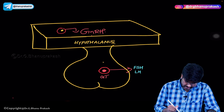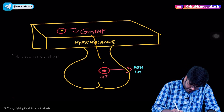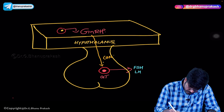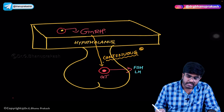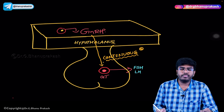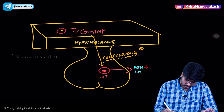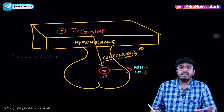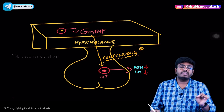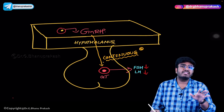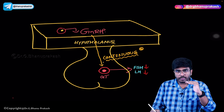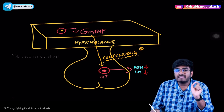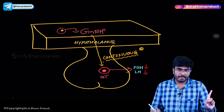Now, what happens if there is a continuous release of GnRH onto gonadotropes? FSH and LH are not going to be produced. In this condition, FSH levels go down and LH levels go down. So continuous stimulation of gonadotropes will cause FSH and LH production to go down. The entire hypothalamo-pituitary-ovarian axis is inhibited. You need pulsatile release of GnRH, not continuous.